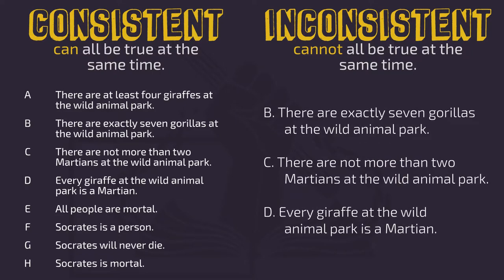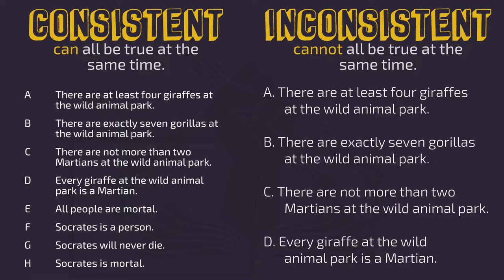Now we're going to look at the next one. Are the sentences below consistent or inconsistent? Statement B: there are exactly seven gorillas at the wild animal park. Statement C: there are not more than two Martians at the wild animal park. Statement D: every giraffe at the wild animal park is a Martian. This is also a consistent set of statements — we are not told how many giraffes there are at the park, so each one of these could be true. Now, if we included Statement A — there are at least four giraffes at the wild animal park — then we would have a contradiction, as Statements C and D imply that there are only two Martian giraffes at the park.